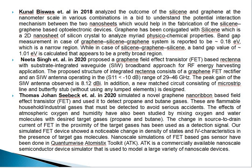In 2018, Kunal Biswas analyzed the outcomes of silicene and graphene at nanometer scale to understand the potential interaction mechanism between these two nanosheets, which would help in fabrication of silicene-graphene-based optoelectronic devices. In 2020, Neeta Singh proposed a graphene field effect transistor-based rectenna with a substrate integrated waveguide broadband approach for RF signal harvesting applications. The proposed structure consists of a graphene FET rectifier and substrate integrated waveguide antenna operating in the range of 29 to 46 GHz. The peak gain of the SIW antenna observed is 8.12 dBi.